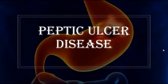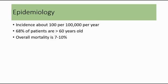Today, I'm going to talk about peptic ulcer disease. For epidemiology, the incidence is around 100 out of 100,000 per year. 68% of patients are more than 60 years old, and the overall mortality is 7 to 10%.